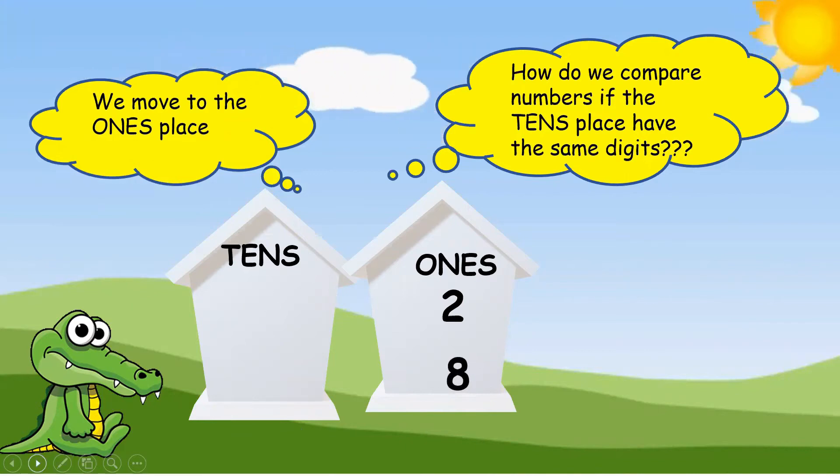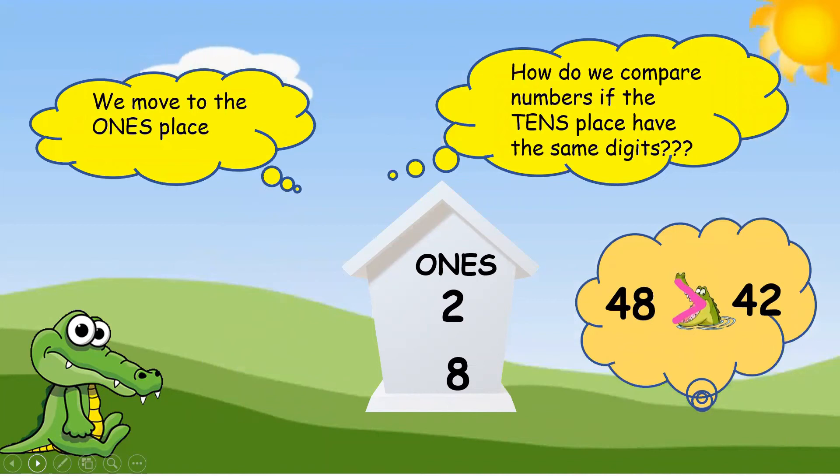In the ones place, we have two and eight. You know eight is more than two. So, 48 is more than 42. Again, Crocky eats the greater number. That is 48.